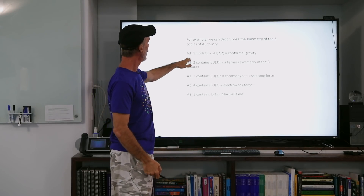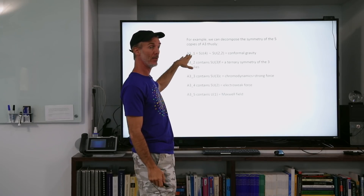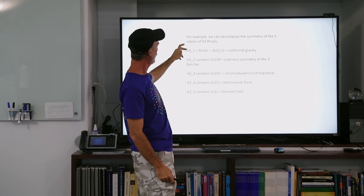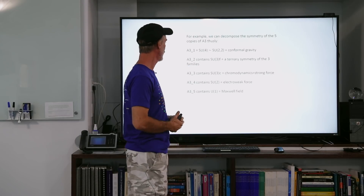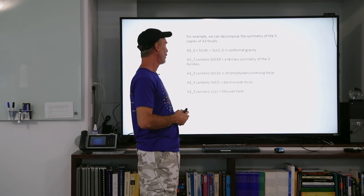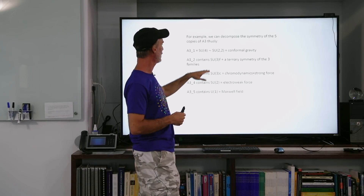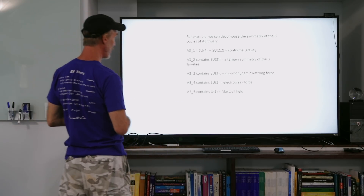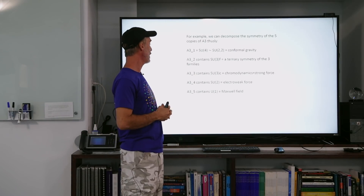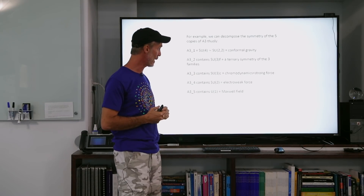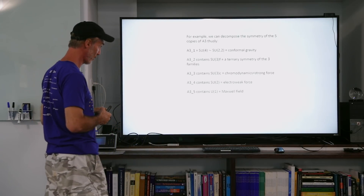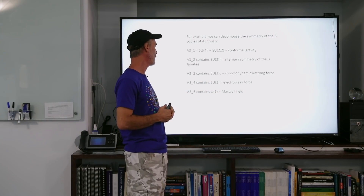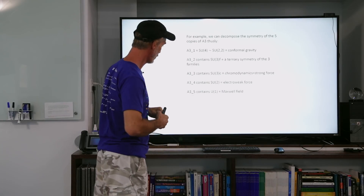We can decompose the symmetry of these five copies of A3 that are in the 20-group and all over the QSN as follows. We have A31 which can correspond to SU4, which can relate to conformal gravity. We have another copy that contains SU3, which relates to a ternary symmetry of the three families — the three generations. We have another A3 that contains SU3, which can relate to chromodynamics — the strong force. We have another copy that contains SU2, which relates to the electroweak force, and then a fifth copy which contains the U1 portion of Maxwell's field.